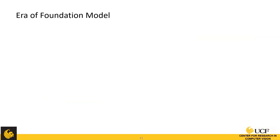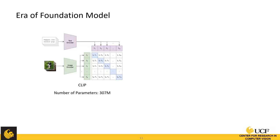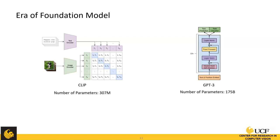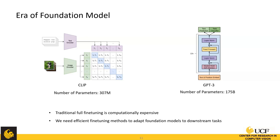These are popular representation learning methods before the era of foundation models. Recently, we've seen a great wave of foundation models across different areas, including computer vision — for example, the CLIP model. However, these foundation models are very large: the largest image encoder in CLIP has over 300 million parameters, and GPT-3 has 175 billion parameters. If we follow traditional full fine-tuning to adapt them to downstream tasks, the computational cost would be very expensive. We need new efficient fine-tuning methods.